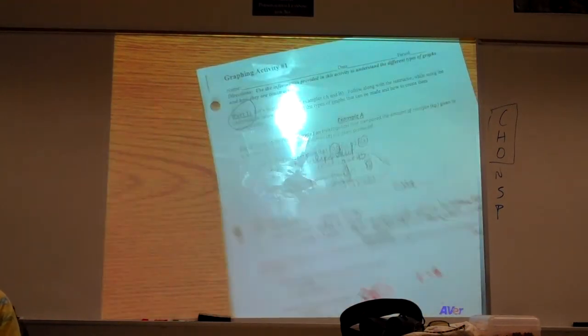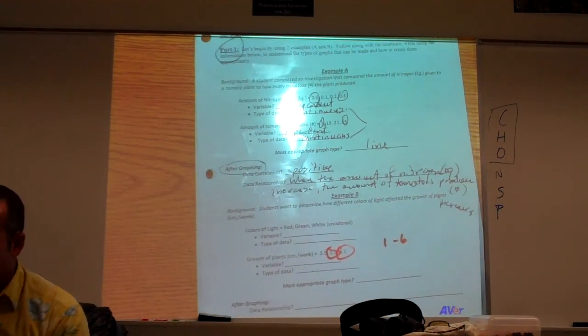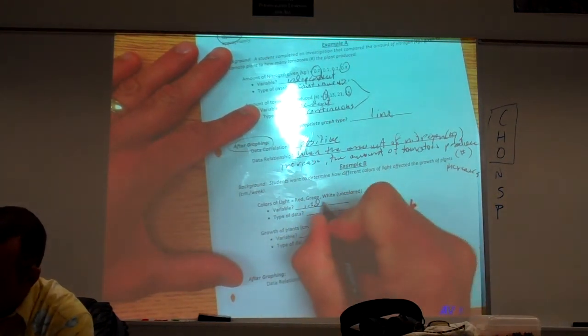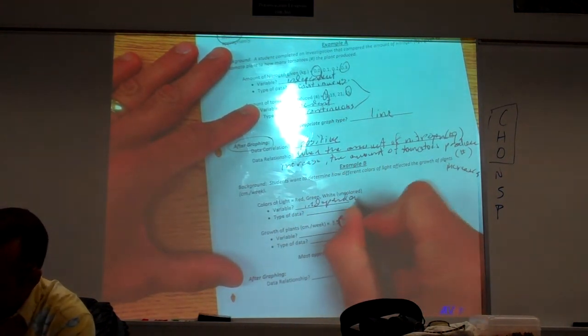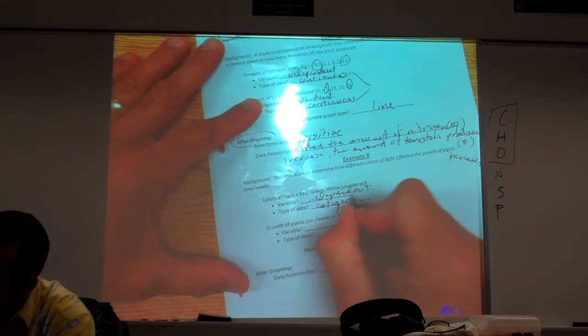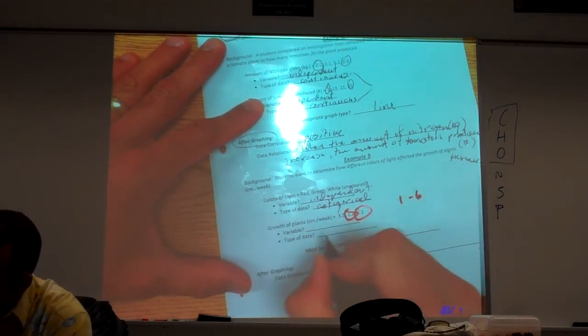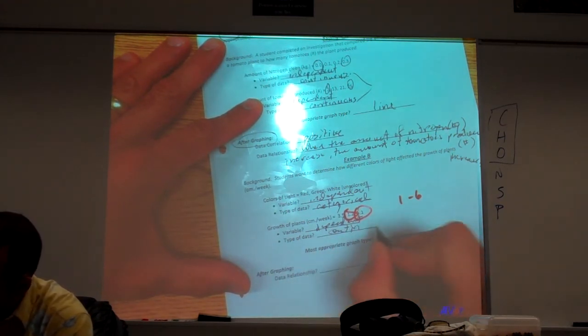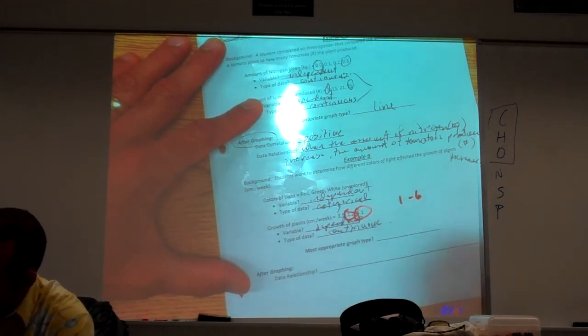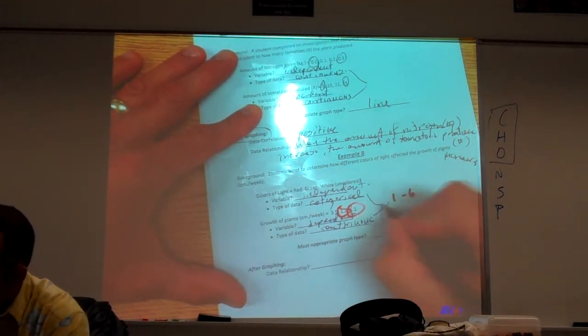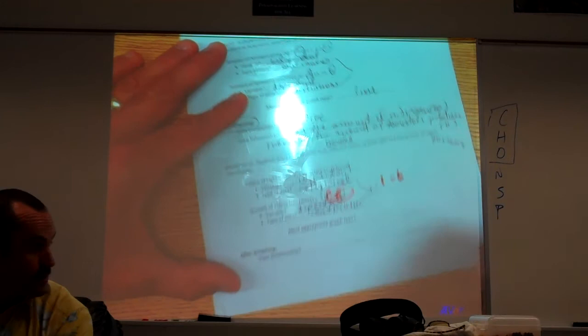Let's go back to our worksheet so we can identify this. So red was our independent variable, so let's label it off, and it was categorical data. Growth was our dependent variable, and it was continuous data. So because we have continuous by categorical, we're going to have what type of graph? Bar graph.